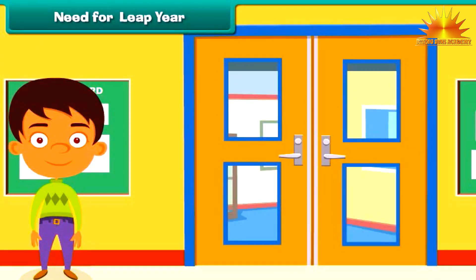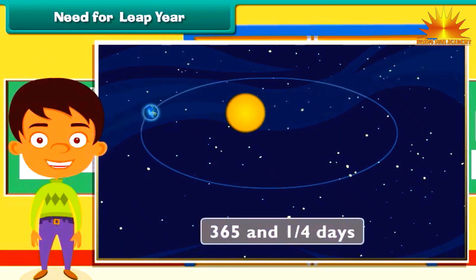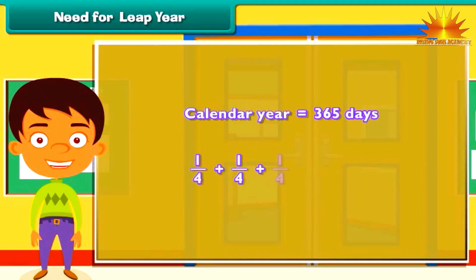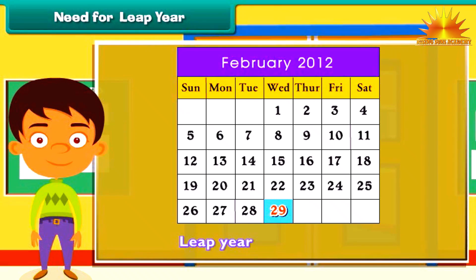Earth completes one revolution around the sun in 365 and one-quarter days, but our calendar year has only 365 days. So one-quarter of a day gets left out every year. In 4 years, the leftover quarters add up to 1 full day. Hence, every 4 years an extra day is added in the month of February. Such a year is known as a leap year — February has 29 days in a leap year, and the year itself has 366 days.